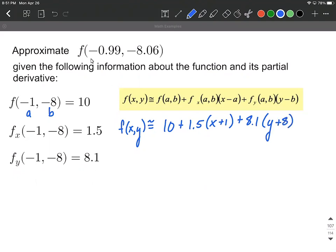Now let's use it to actually approximate the point we care about. It's a point very close to negative one, negative eight. So to evaluate this, we'll plug in negative 0.99 comma negative 8.06, and that's replacing our x and our y in the formula over on the right-hand side.